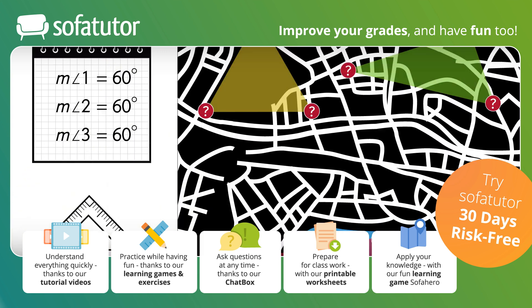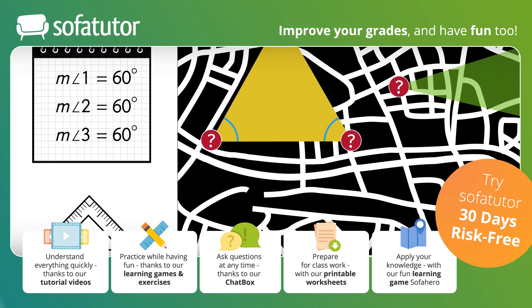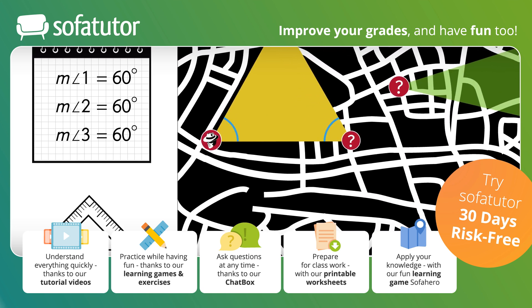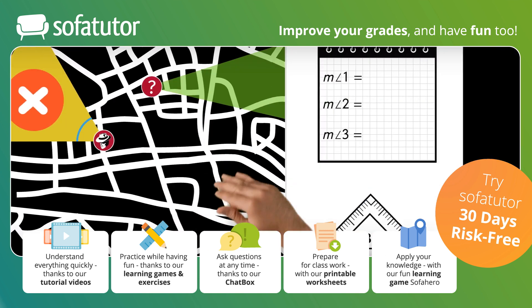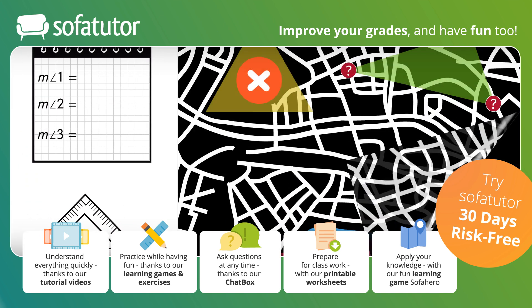Since all the angles in this triangle are the same measure, and Irving can't be in three places at once, this must not be the right meeting place. Irving can disregard this triangle. Let's take a look at the hint for the next triangle.